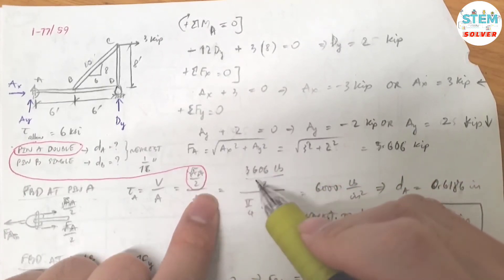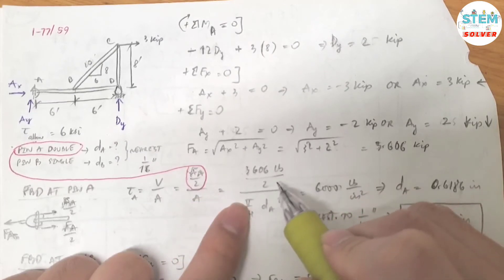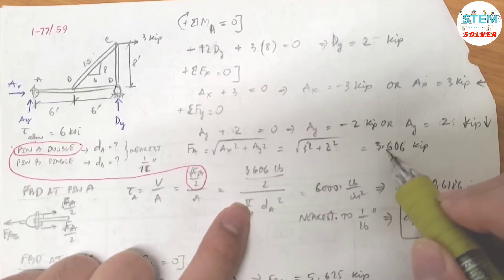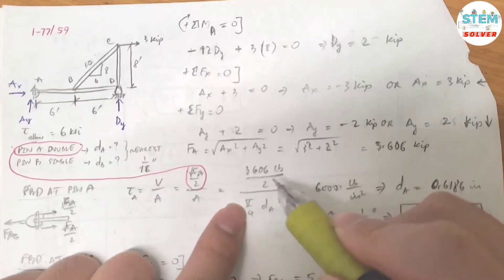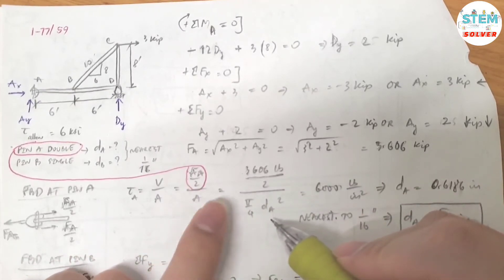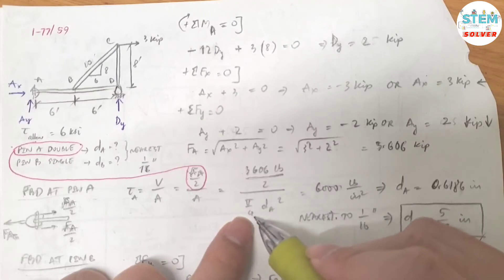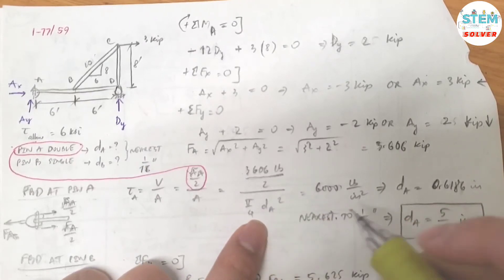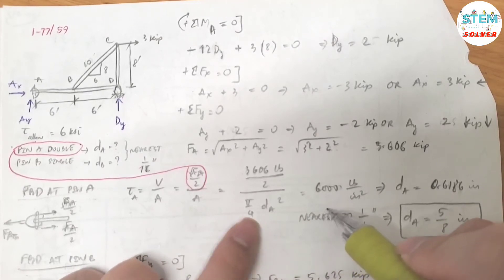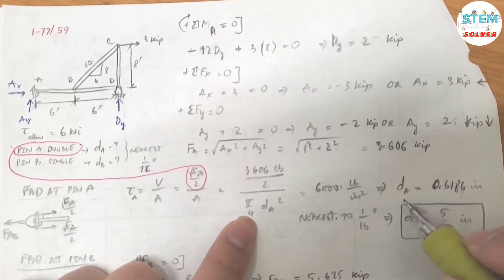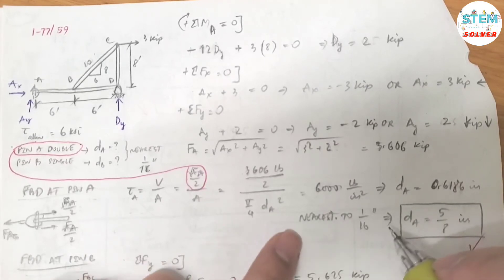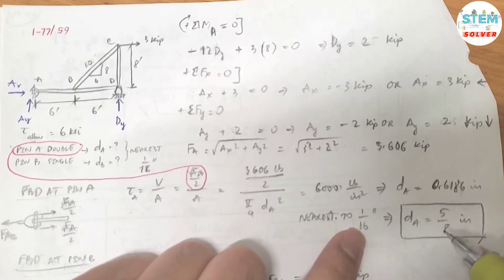So FA is 3,606 pounds, what we just found from here, divide by 2 because we have double shear again. Now the area is equal to π/4 times the diameter squared, and that is equal to the allowable shear stress of 6,000 pounds per inch squared. For the unknown, I got diameter of pin A is equal to 0.6186 inch, and to the nearest 1/16th inch, it is going to be 5/8 inch.